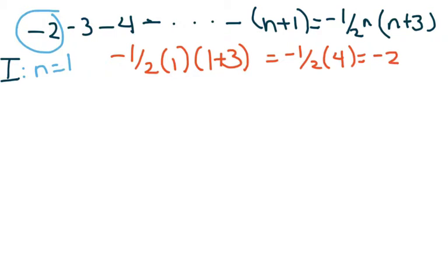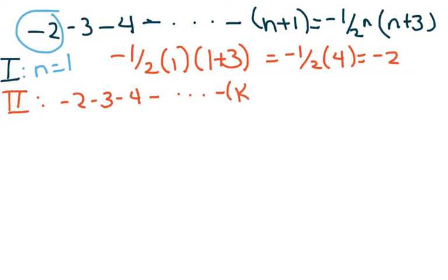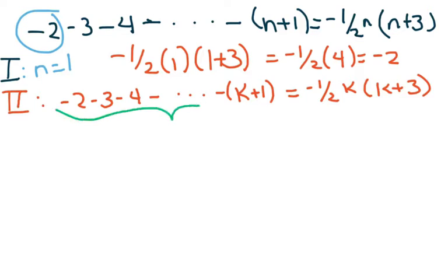Now we check condition two. Copy everything down with k, which is the tedious part, but it keeps things straight. Students who skip this step tend to make more mistakes.